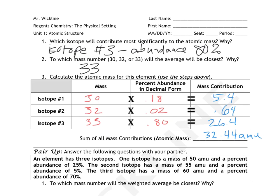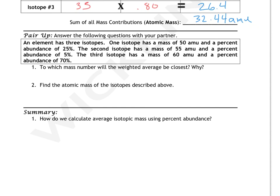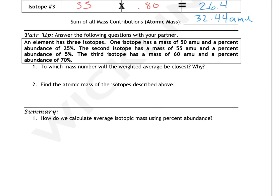So we have arrived at the pair up and in the pair up today, just copy down the information right here. An element has three isotopes, one isotope has a mass of 50, abundance of 25. The second has a mass of 55, abundance 5. The third has a mass of 60, abundance 70. And I want you to answer both of these questions in the pair up tomorrow, but get all the information copied down now into the classwork section of your binder and also the summary as well. Hopefully when I see you guys in class, just this part won't take very long at all. And then the summary can be at the end.